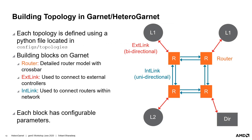Garnet provides several building blocks to create flexible topologies. The topology files reside in configs/topologies, where any new topology file can be added and used. The key building blocks are the routers, external links, and internal links. Routers include the switching mechanism, the crossbar unit, as well as the required output and input buffers. External links connect external objects such as cache controllers, while internal links are used to connect routers within the network. Each block has configurable parameters such as link latency or router latency, and in the case of Heterogarnet, clock domains and widths as well.